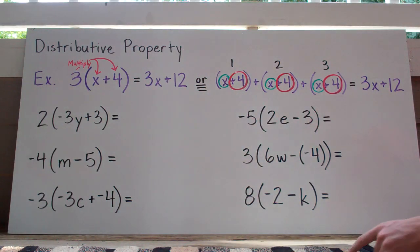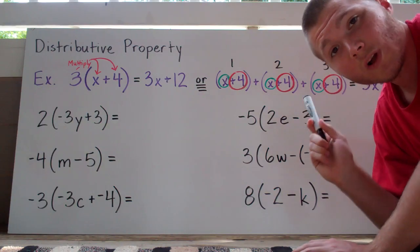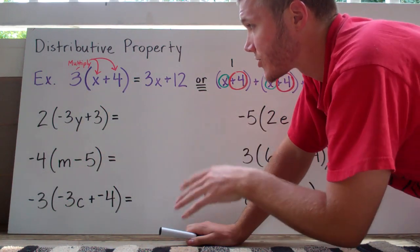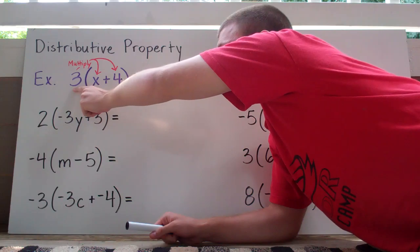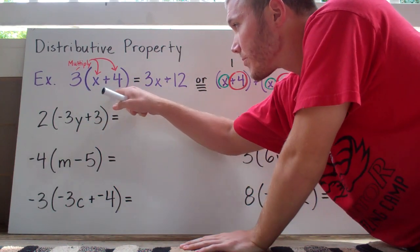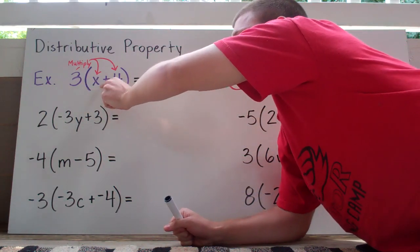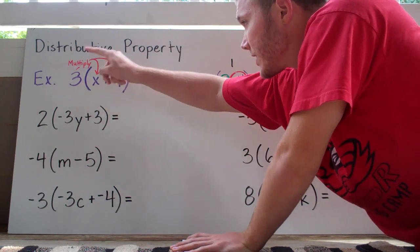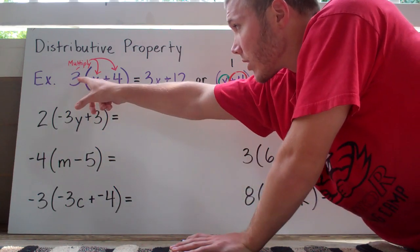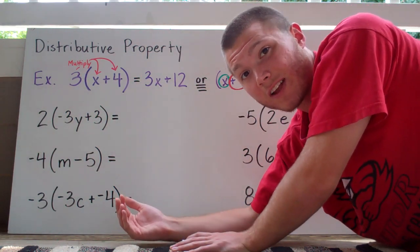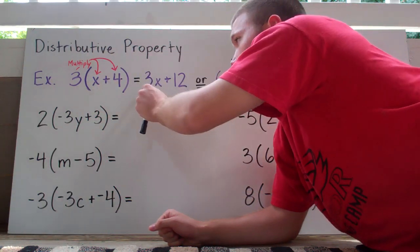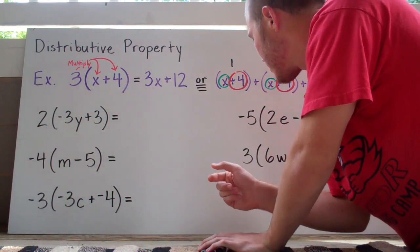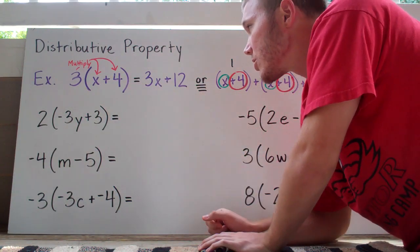Now, the distributive property — a little more complicated. When you have a number outside a set of parentheses, you multiply that number by each term inside the parentheses. For example, 3 times (x plus 4): I do 3 times x, which is 3x, and then 3 times 4, which is 12. Remember, if you don't see an operation sign, you're multiplying. So 3(x + 4) gives us 3x plus 12.